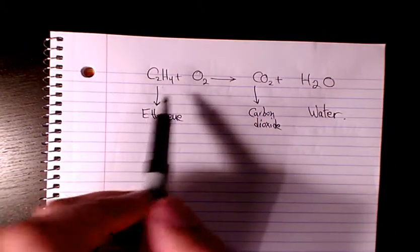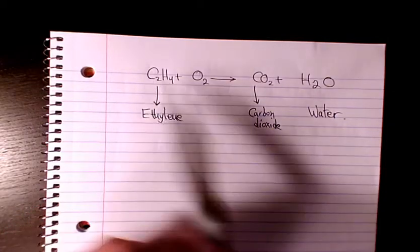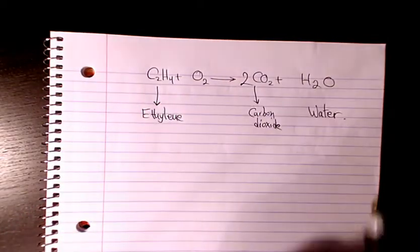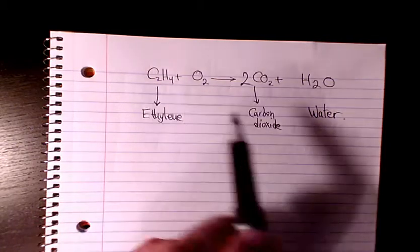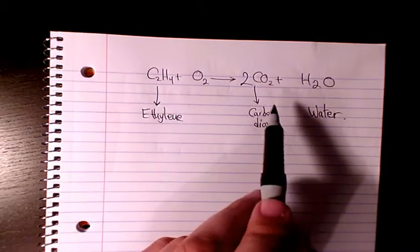So let's see how we can do it. We have two atoms of carbon, so we need to put two here to balance it. Now carbon is balanced because we have two here and two here. What about hydrogen?